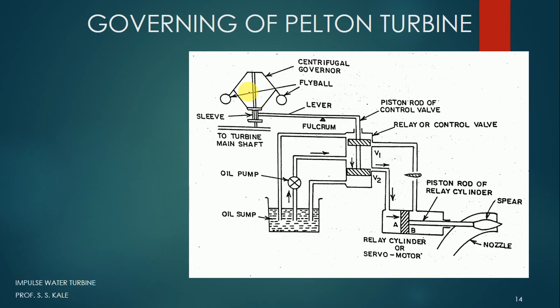So it is a requirement of the system that the speed of the turbine has to remain constant, and maintaining the turbine at constant speed is done by the governor. There are various types of governors you might know from the theory of machines, but here we are going to see a ball-type governor which will maintain a constant speed of the impulse turbine. Let us see the construction of this particular system.